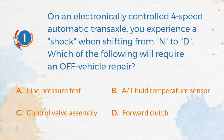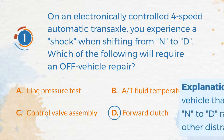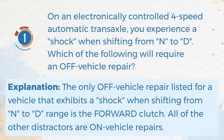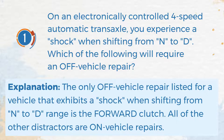The correct answer is D. Forward Clutch. Explanation: The only off-vehicle repair listed for a vehicle that exhibits a shock when shifting from N to D range is the forward clutch. All of the other distractors are on-vehicle repairs.